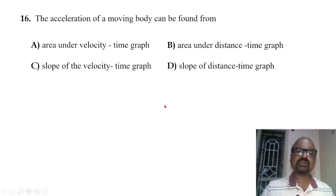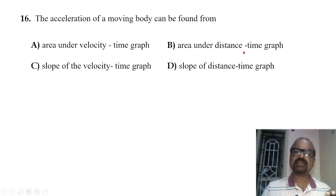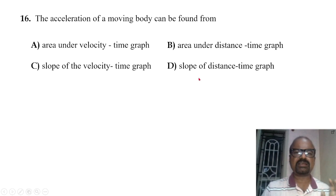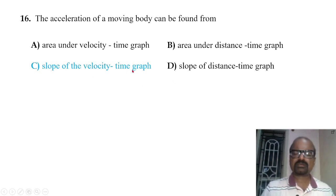The acceleration of a moving body can be found from: the area under the velocity-time graph gives displacement; the slope of the velocity-time graph gives acceleration. So the slope of the velocity-time graph is the correct answer.